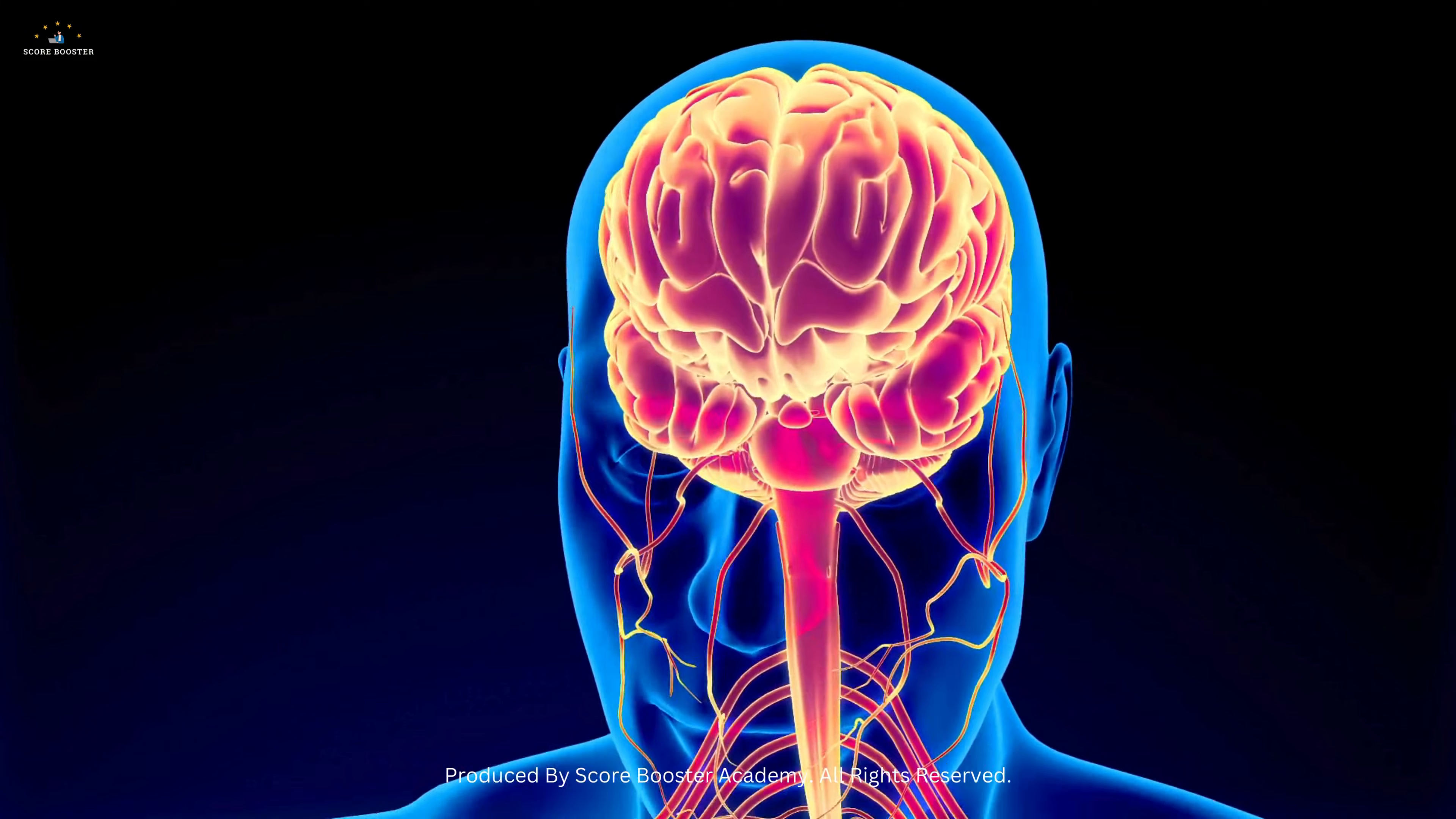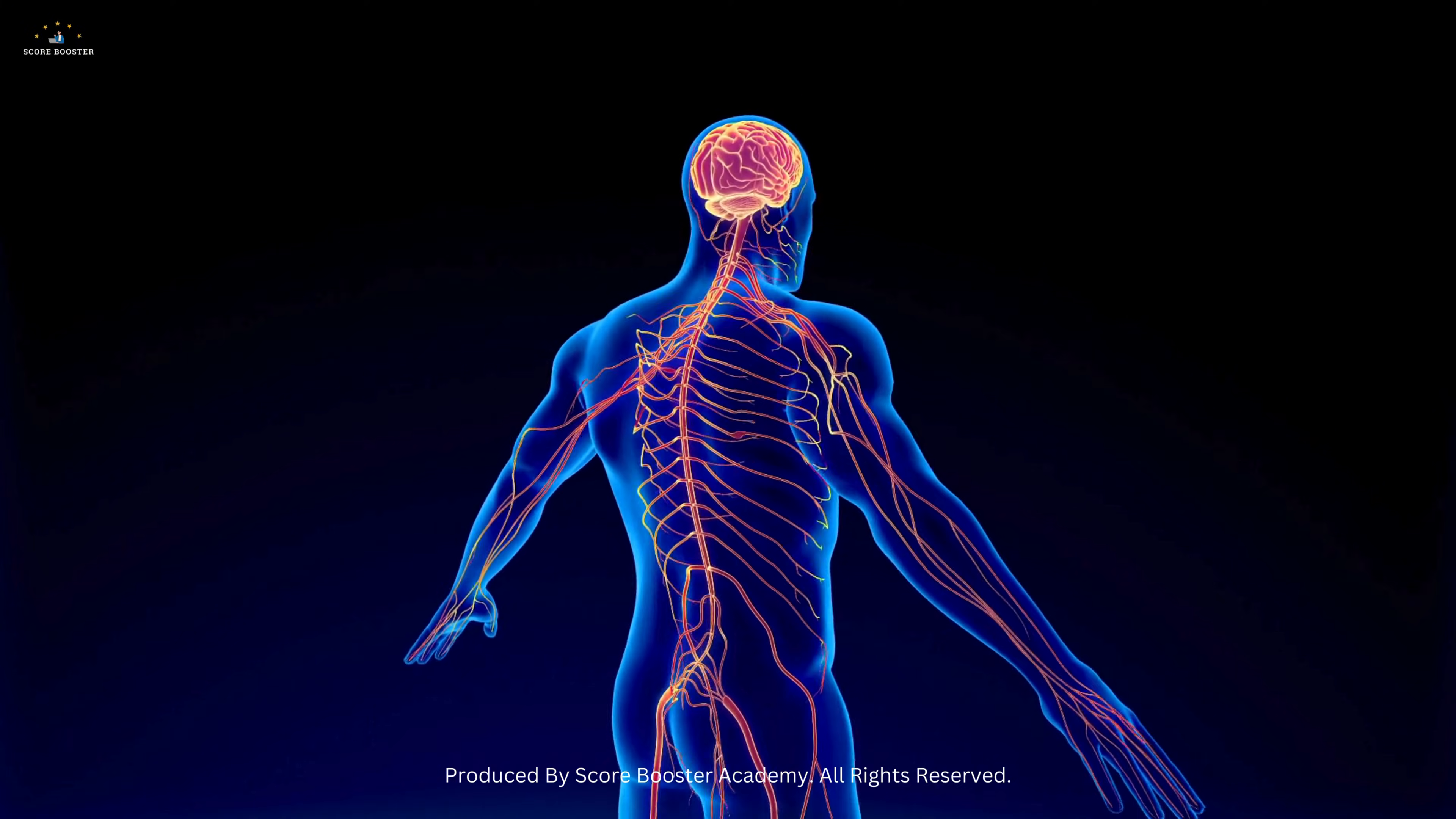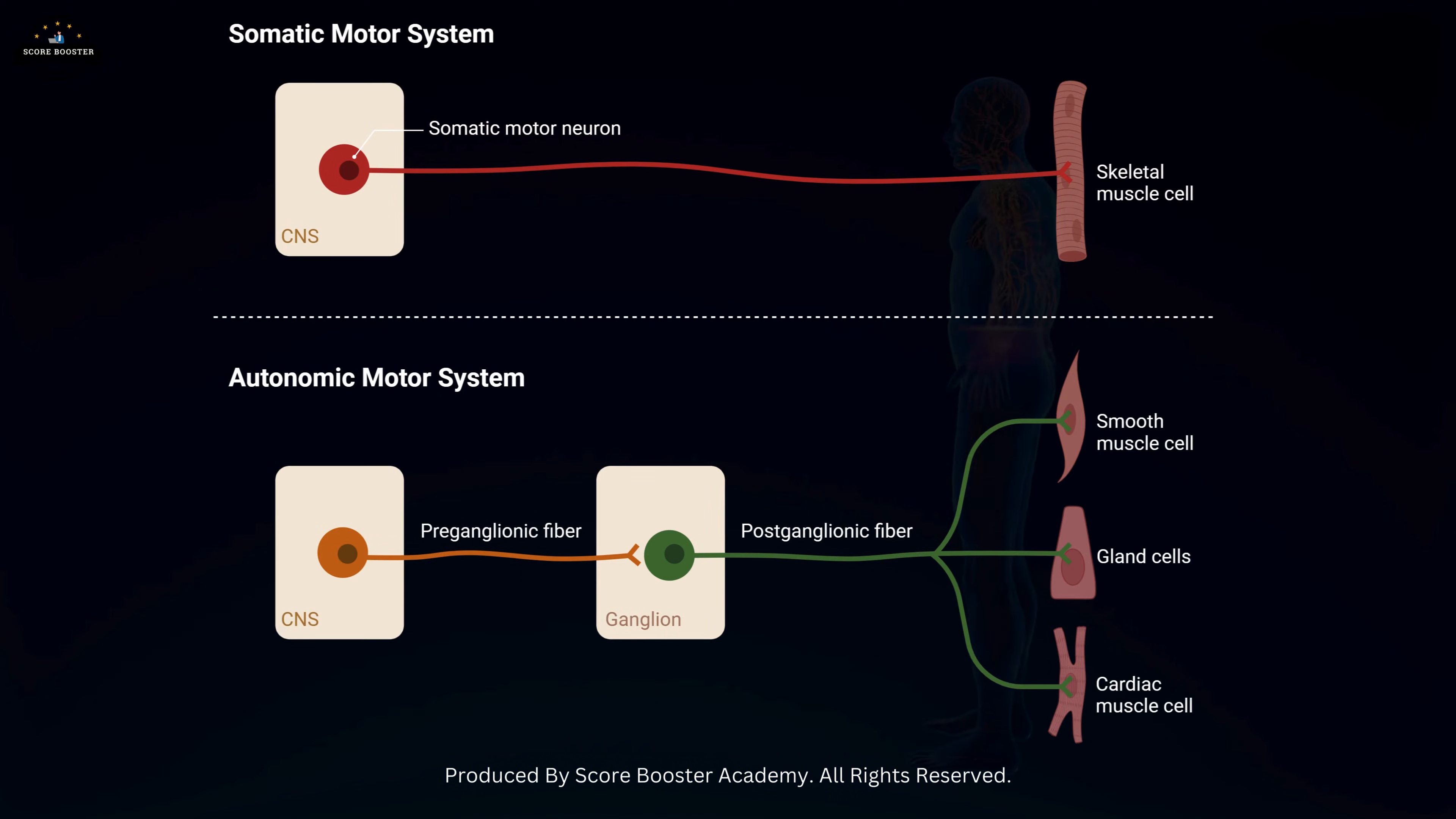The peripheral nervous system extends the reach of the central nervous system, ensuring that every part of the body is connected to the brain and spinal cord. It's divided into the somatic and autonomic nervous systems.